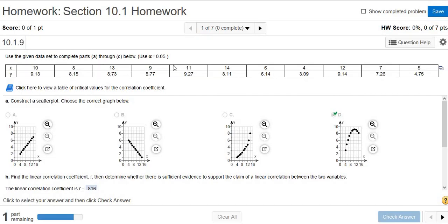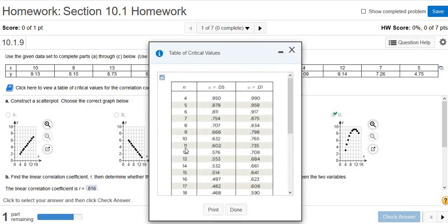Then N, you have to count the pairs. 1, 2, 3, 4, 5, 6, 7, 8, 9, 10, 11. So you click on this. You go down to 11 and then your alpha. So 0.602. That's called the critical value.